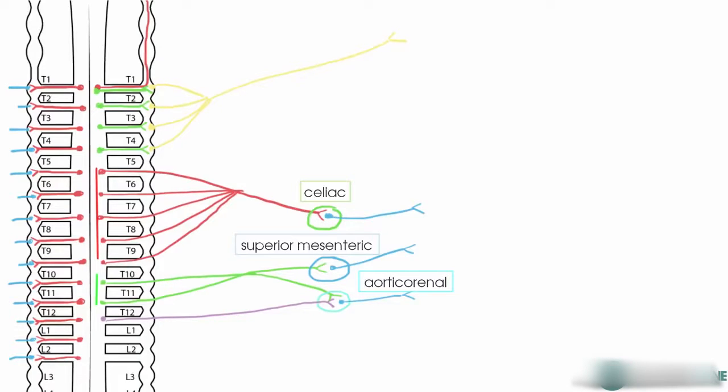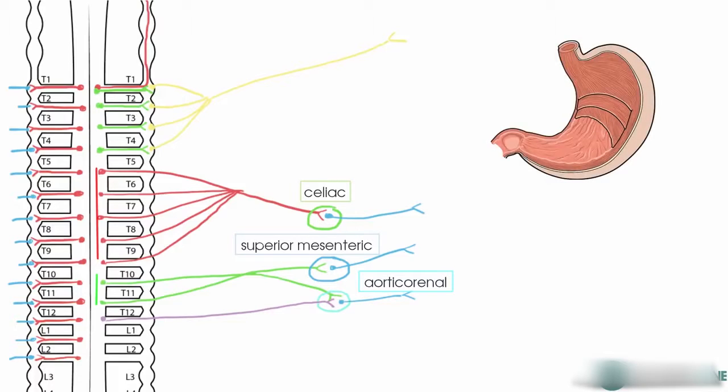For example, the lesser curvature of the stomach is supplied by the left gastric artery, so the innervation to this lesser curvature will follow the same blood supply along the left gastric.